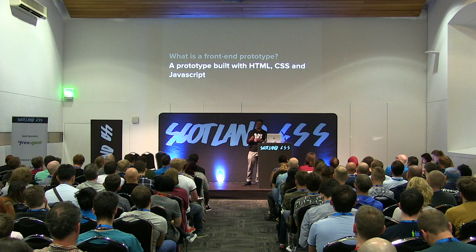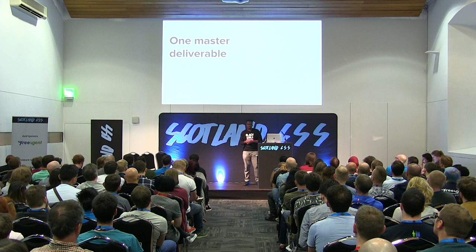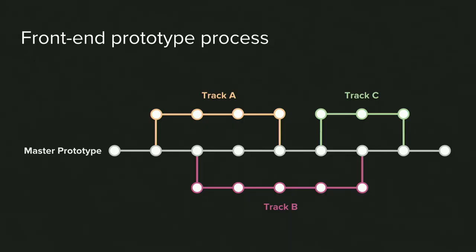The main benefit of a front-end prototype is that there's one master deliverable. When I was at Nasdaq we had over 30 designers working on one product. We used this method where we had one master prototype and basically branched off from it — the same way engineers build their products. This is important because some features overlap, and the only way to ensure we use the same content and patterns is by building within a front-end prototype.